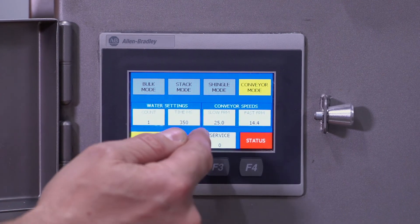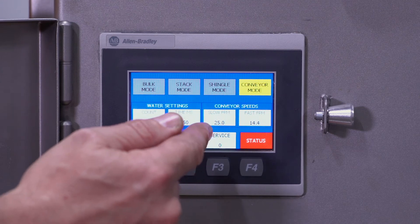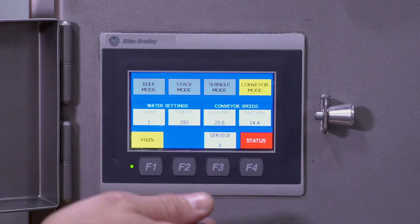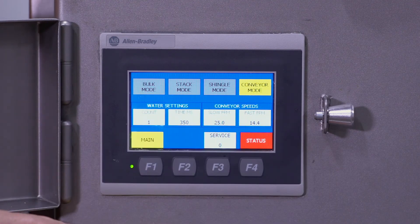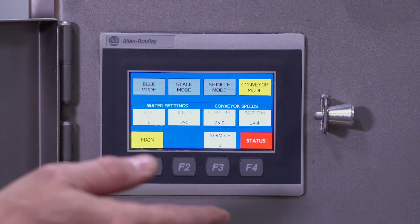Then you have the conveyor speeds. You have the slow speed, which is the speed it's running while it's cutting product. You have the fast speed, which is the index speed, which is between your groups.